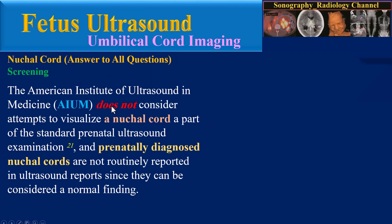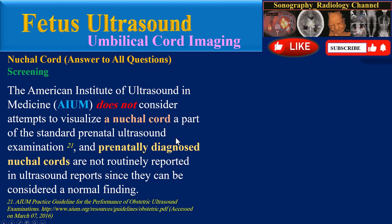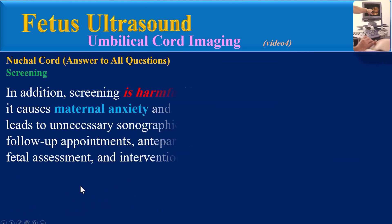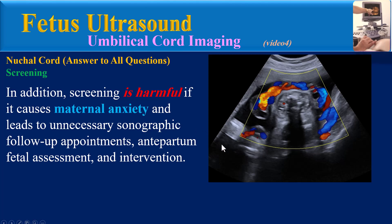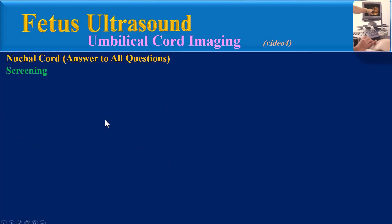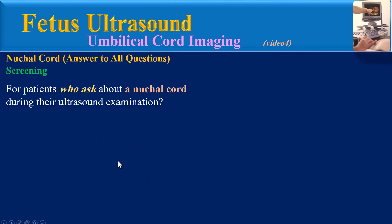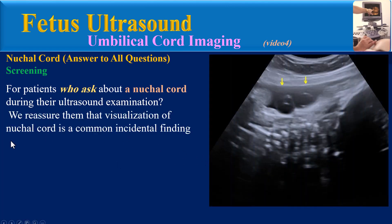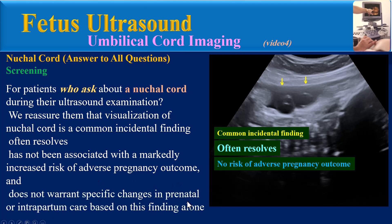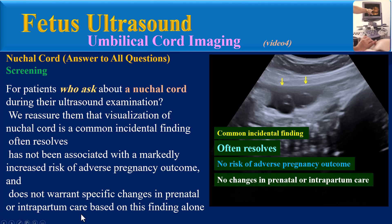Screening: The American Institute of Ultrasound in Medicine (AIUM) does not consider attempts to visualize a nuchal cord part of the standard prenatal ultrasound examination. Prenatally diagnosed nuchal cords are not routinely reported in ultrasound reports, as they can be considered a normal finding. Screening is harmful if it causes maternal anxiety and leads to unnecessary sonographic follow-up appointments, antepartum fetal assessment, and intervention. For patients who ask about a nuchal cord, reassure them that it is a common incidental finding that often resolves, has not been associated with a markedly increased risk of adverse pregnancy outcome, and does not warrant specific changes in prenatal or intrapartum care.